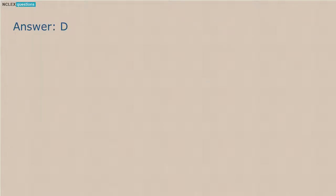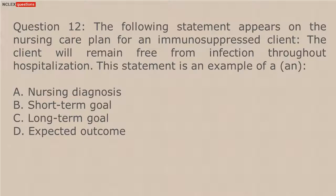Question 12. The following statement appears on the nursing care plan for an immunosuppressed client: 'The client will remain free from infection throughout hospitalization.' This statement is an example of: A. A nursing diagnosis. B. A short-term goal. C. A long-term goal. D. An expected outcome.